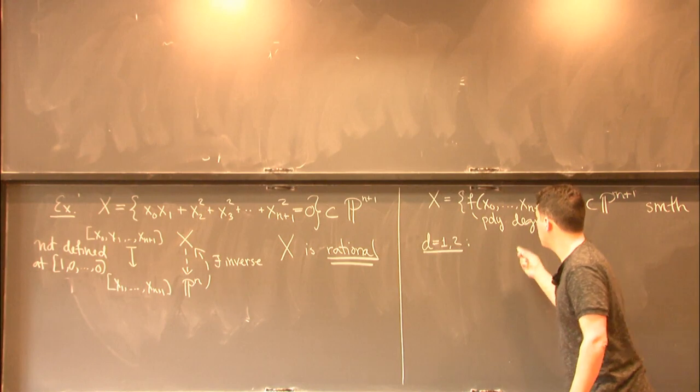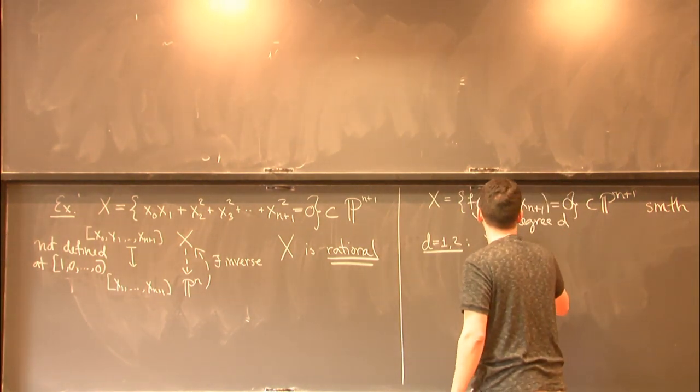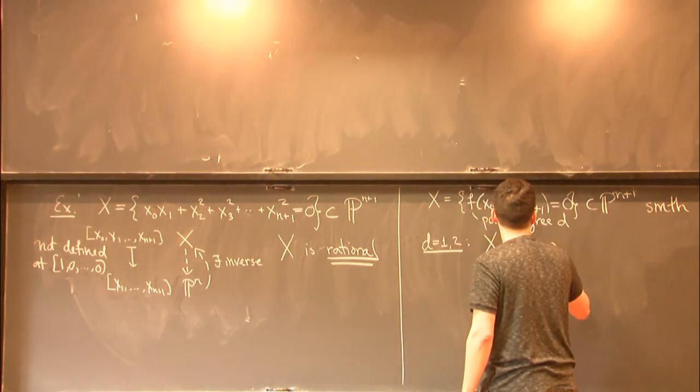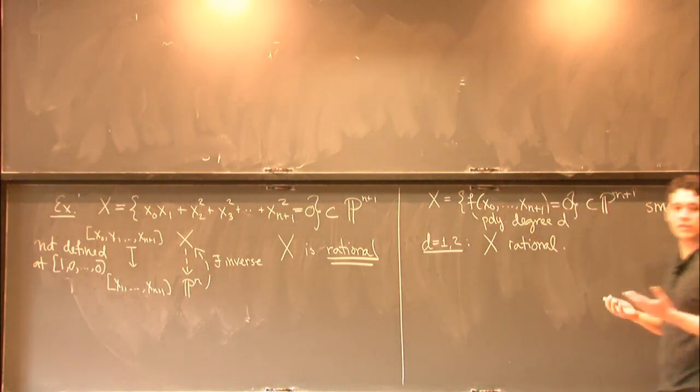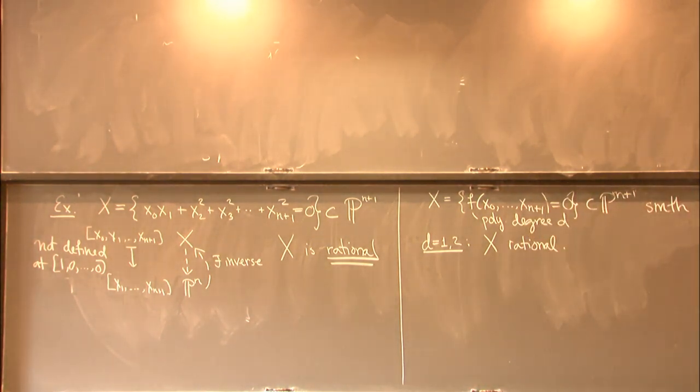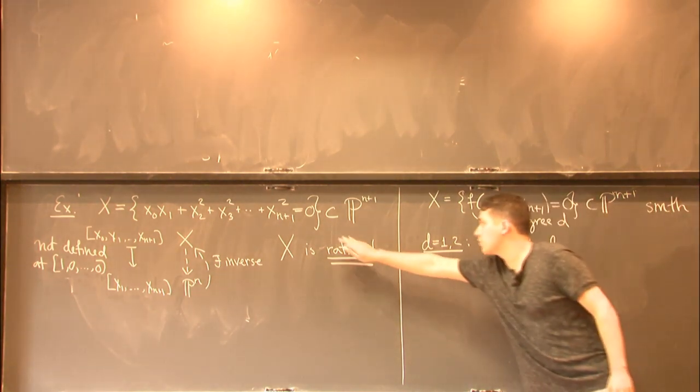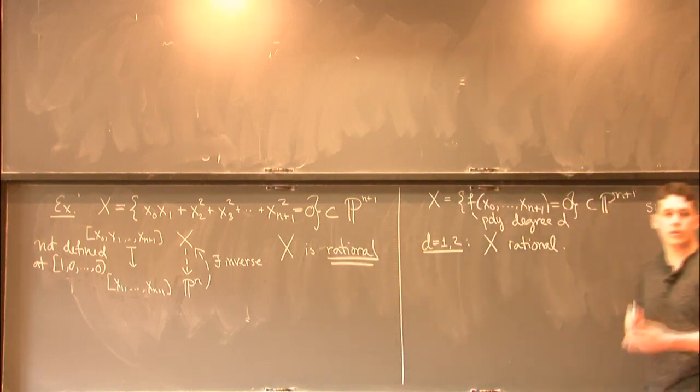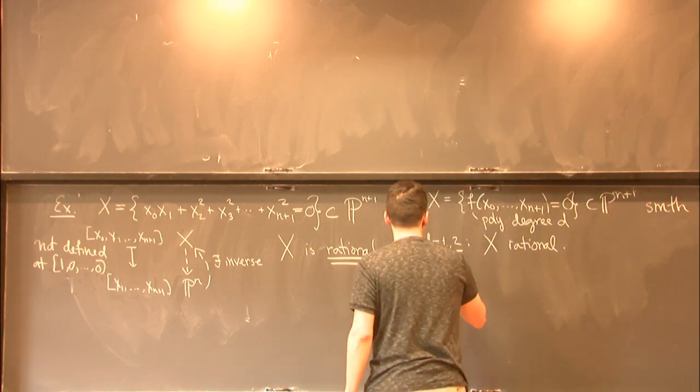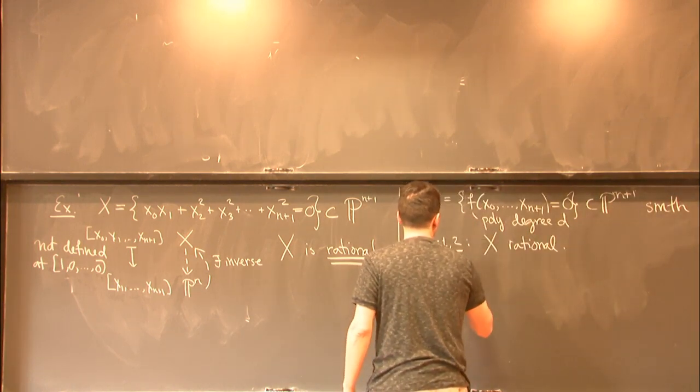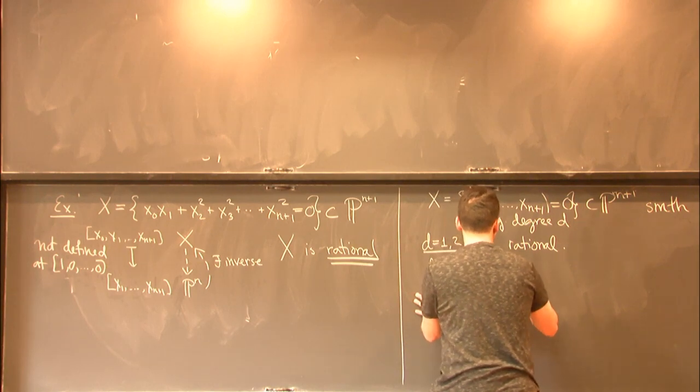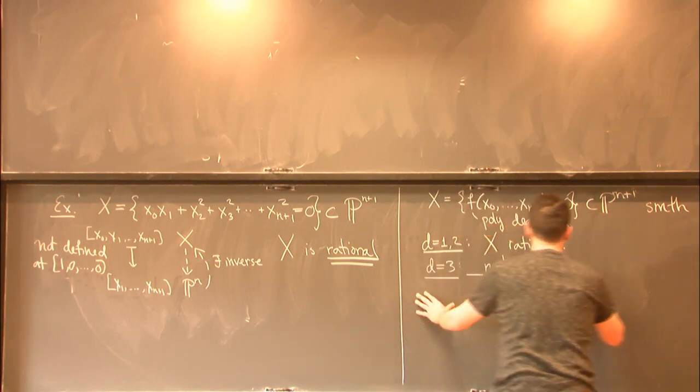So if d is equal to 1 or 2, then x is just rational. Well, if d is 1, that's kind of silly. If d is 1, then it's just a linear subspace. So that's on the nose, isomorphic to projective space. If d is 2, I just gave you a specific f and said it's rational. But that argument actually works for any degree 2 polynomial. And when d is 3, things already get a lot more interesting. So let me just make a little table to summarize what's going on here.